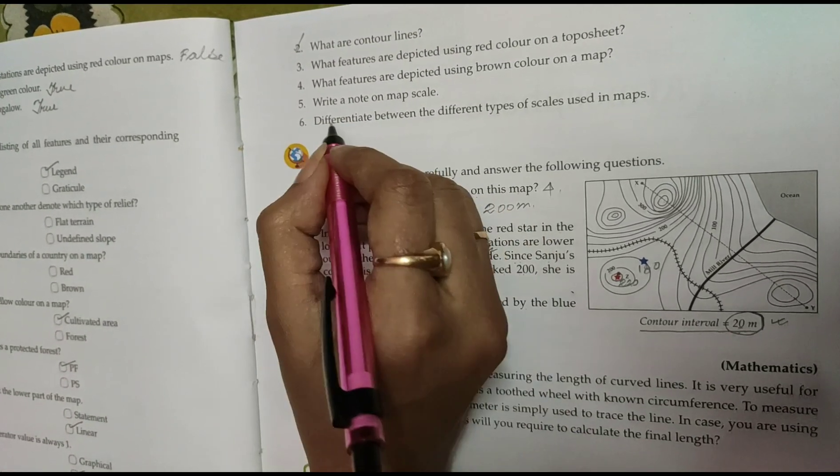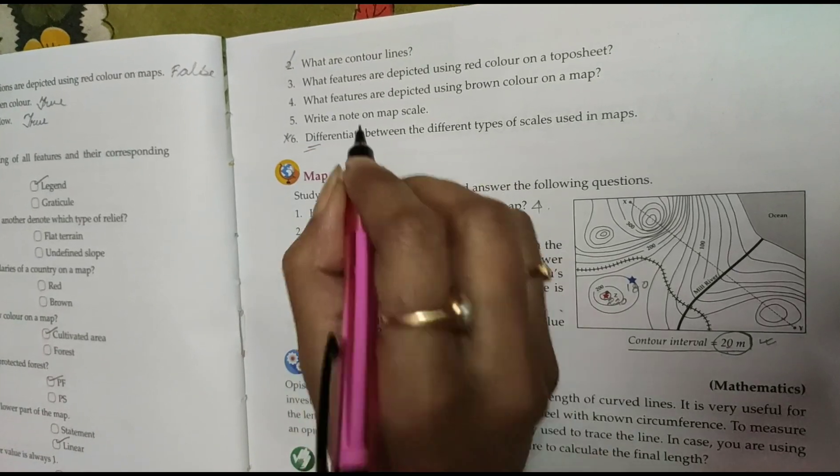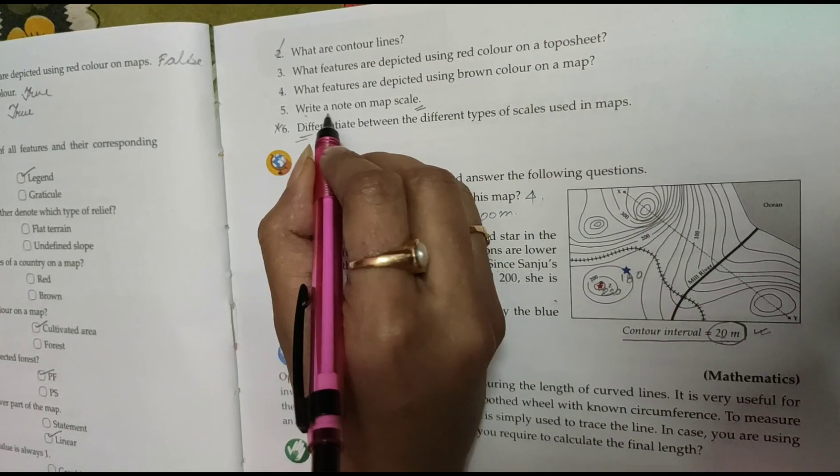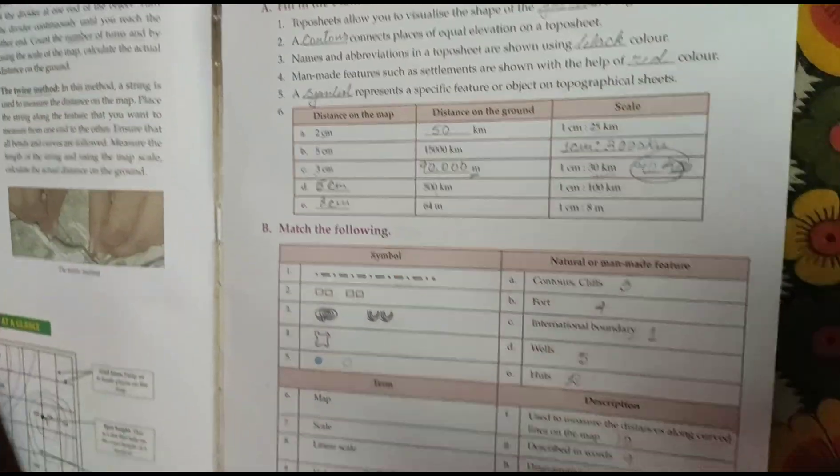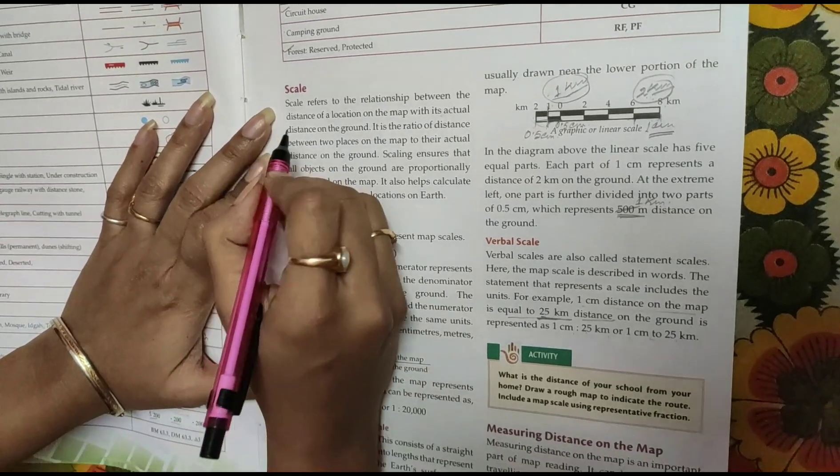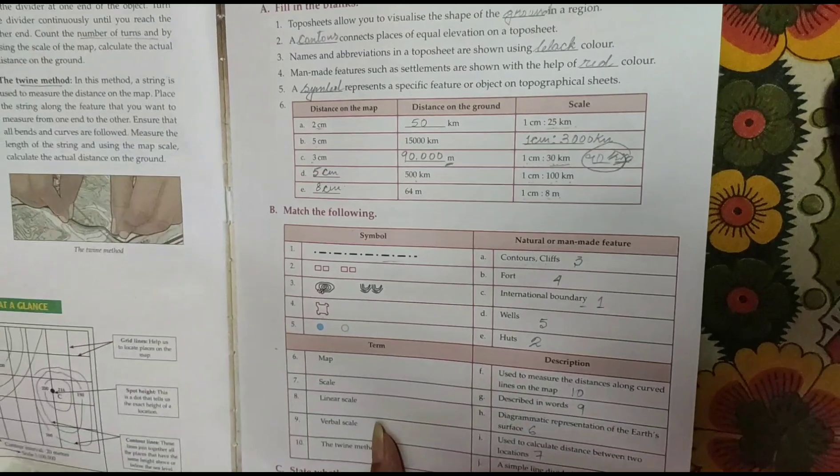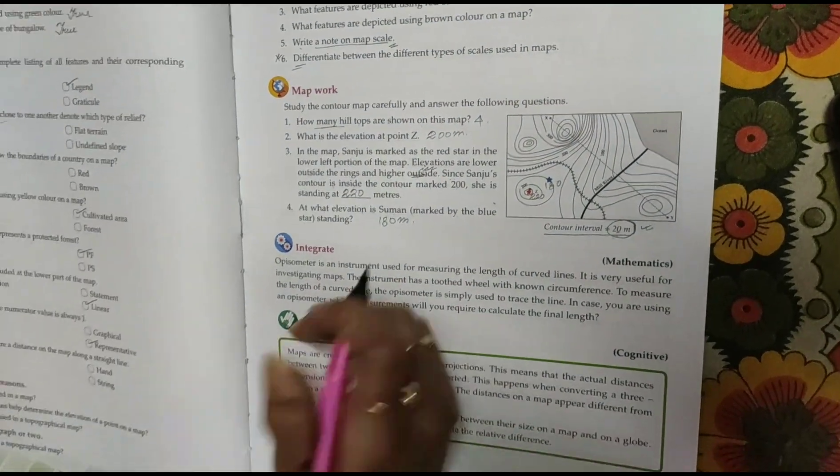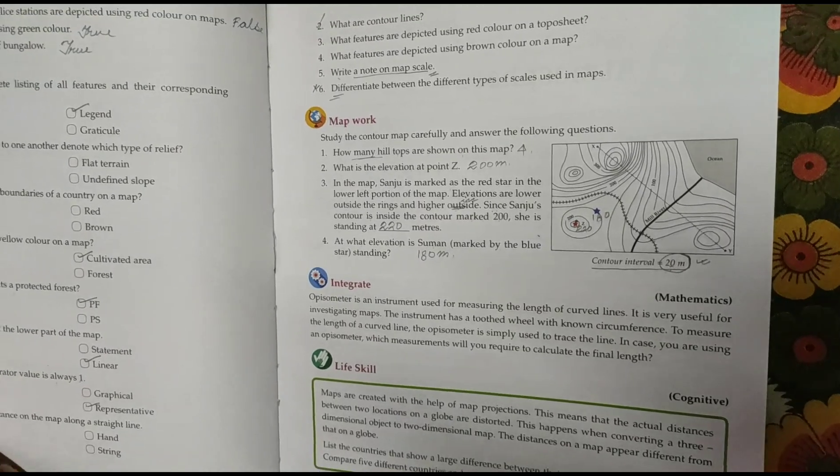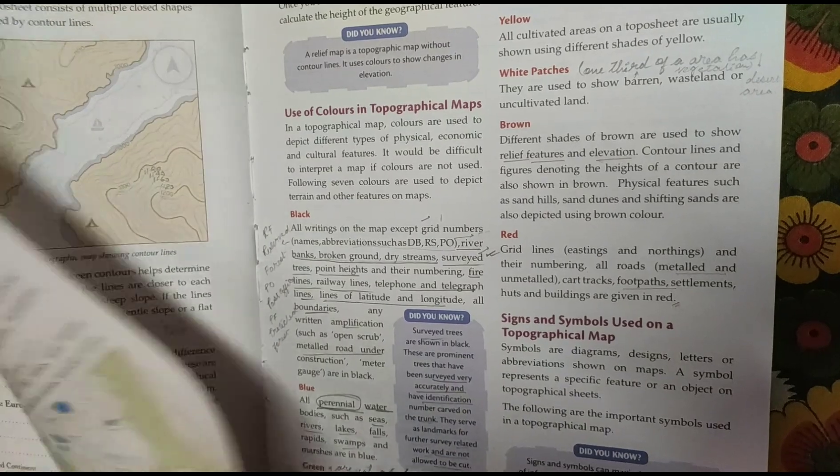So I finished the chapter. I have already given some question answers. Now you have to read, write a note on the map scale, you have to write that one. Here it is given the scale, write a note, that part you have to write. And rest of the questions I have given all the answers, so read the question answers, read the exercises and read the full chapter properly.